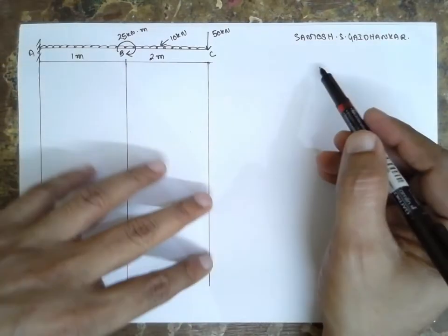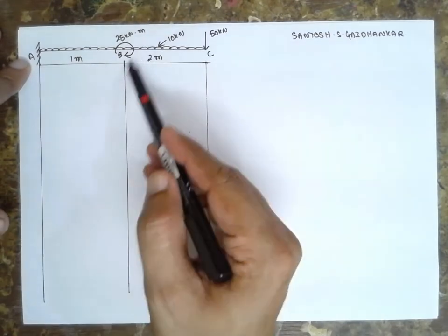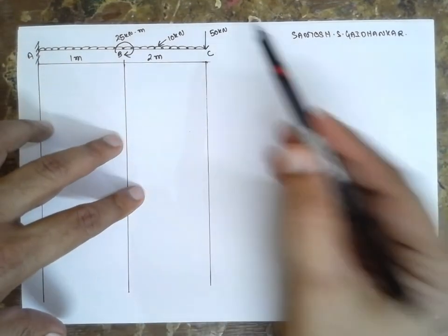I am Santosh Gaidankar. I am solving the problem of a cantilever beam having a couple in an anticlockwise direction and a point load.